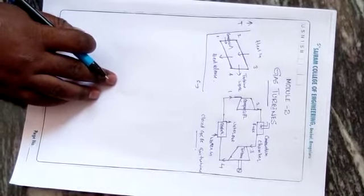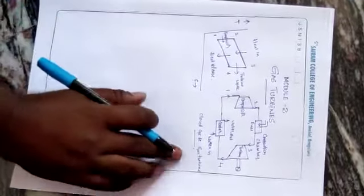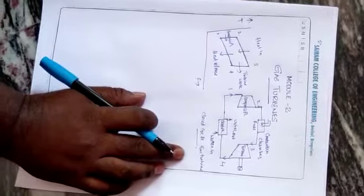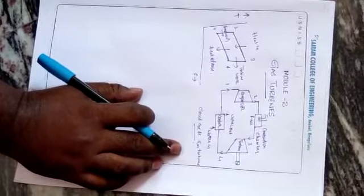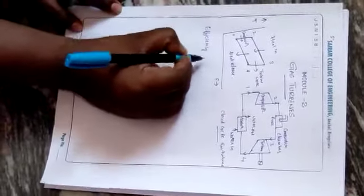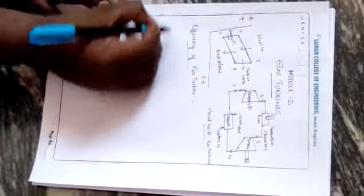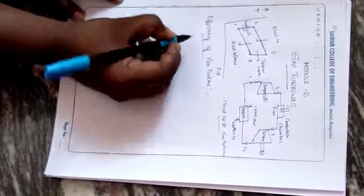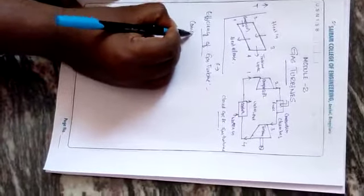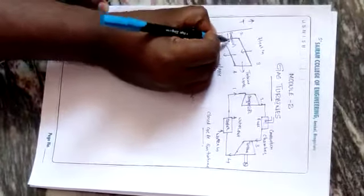Today we are going to see the efficiency — the derivation for the open cycle or closed cycle gas turbine. In this derivation part, that is the efficiency of gas turbines, we first need to take Wt — that is the compressor input work. So compressor work, and the TS diagram shows this as the work input.